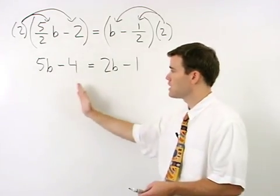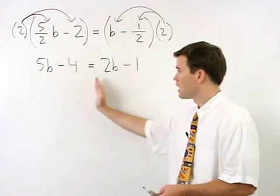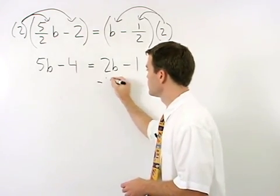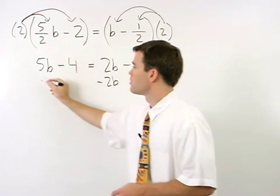Now we can move our b's to the left side of the equation and numbers to the right. We start by subtracting 2b from both sides.